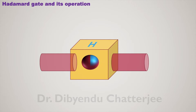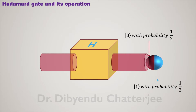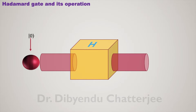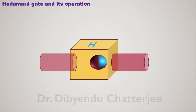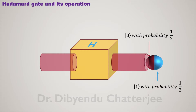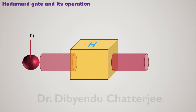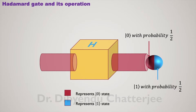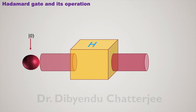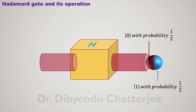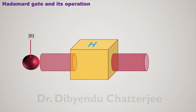Here I am showing the Hadamard operation using an animated theme to create a clear concept. The color represents the state, and the amount of color on the ball represents the probability of getting ket 0 or ket 1 — red represents ket 0 and sky blue represents ket 1. If we measure the colored ball 10 or more times, the probability of getting red or sky blue will be close to one-half.